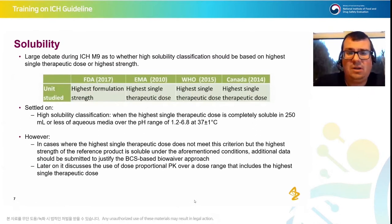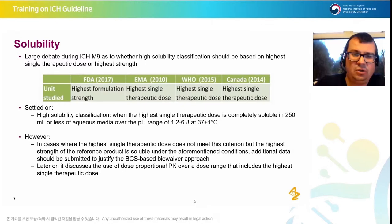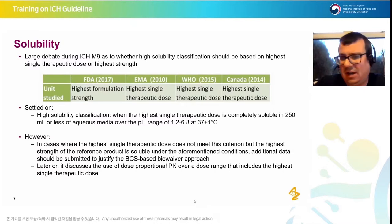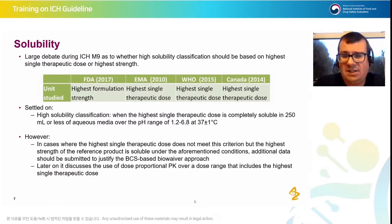We'll move on now to the first part of the classification, which is solubility. During the ICH M9 harmonisation process there was quite a lot of debate as to whether you needed to classify based on highest single therapeutic dose or highest strength. Looking back across guidances from different territories — the FDA, EMA, WHO, and Canada — you can see there was a difference. The FDA's position was highest formulation strength, whereas the rest were based on highest single therapeutic dose.